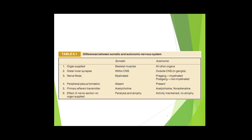Nerve fibers of the somatic nervous system are myelinated. In the autonomic nervous system, preganglionic nerve fibers are myelinated but postganglionic nerve fibers are non-myelinated. Myelin is the sheath or cover of the nerve. The neurotransmitter of the somatic nervous system is acetylcholine, while for the autonomic nervous system it is either acetylcholine or noradrenaline.